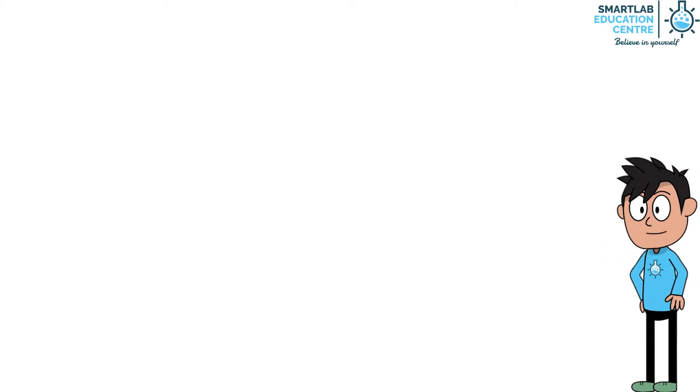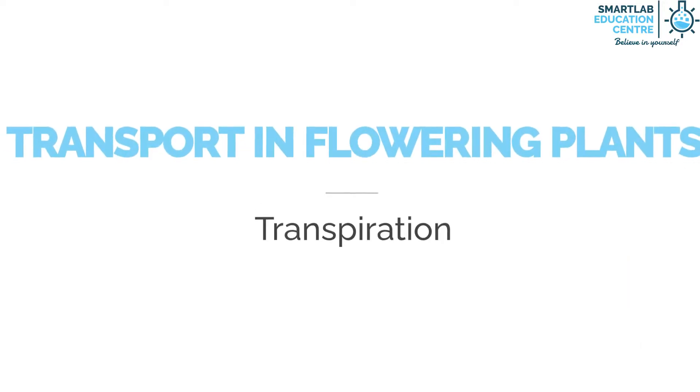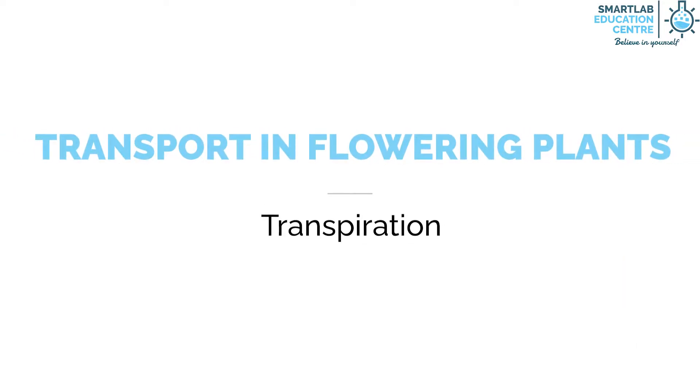Welcome back everyone! Today we learn about transpiration. What is transpiration? Transpiration is the loss of water vapor through the aerial parts of the leaf, especially the stomata, to the atmosphere. Transpiration pull is the upward movement of water from roots to the leaves due to transpiration.